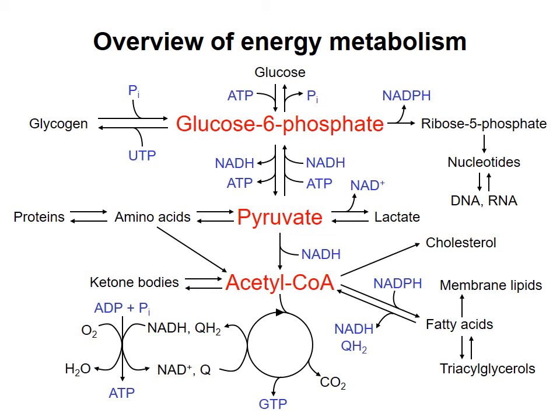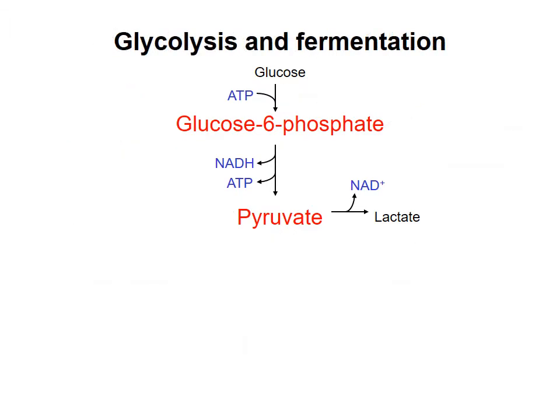In our tour of the main pathways of energy metabolism, we have looked at glycogen synthesis and breakdown. In this video, we'll consider how glucose is metabolized in glycolysis to pyruvate, and in fermentation to lactate or ethanol. For the most part, we're not going to go through the individual steps of these processes, and you are not responsible for knowing the individual steps for the test.